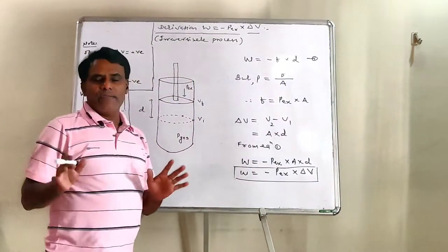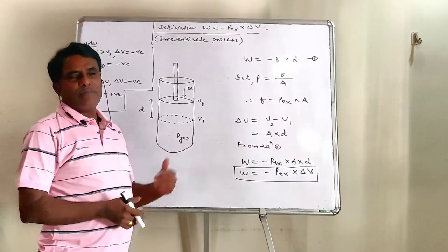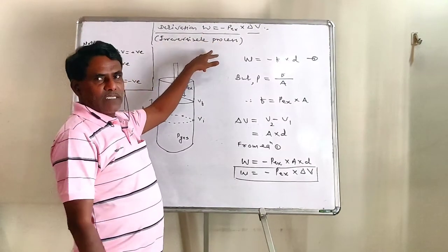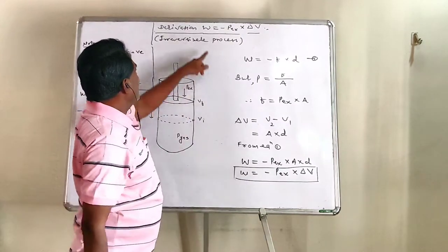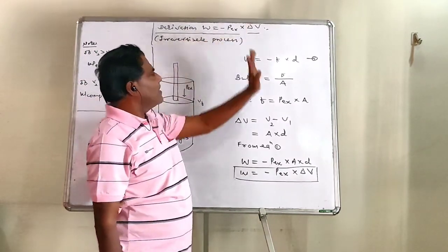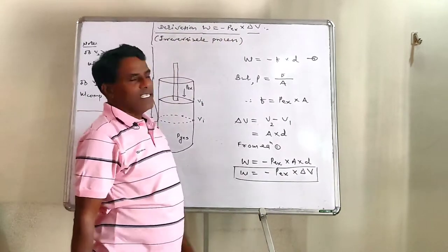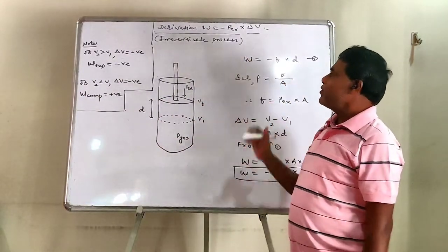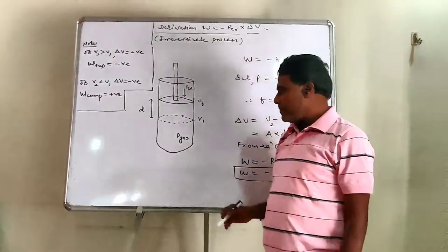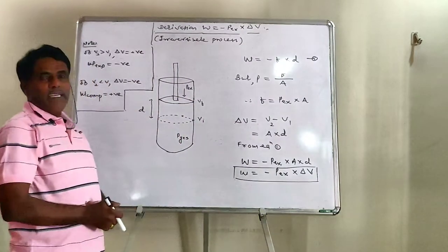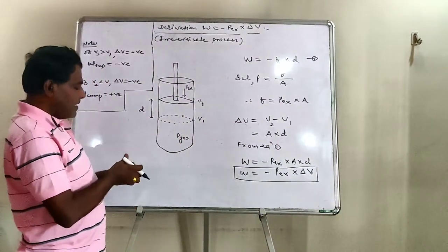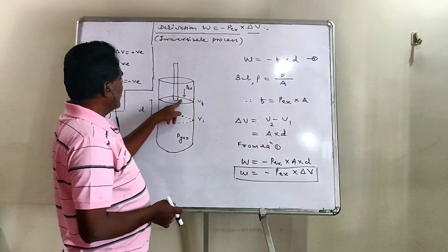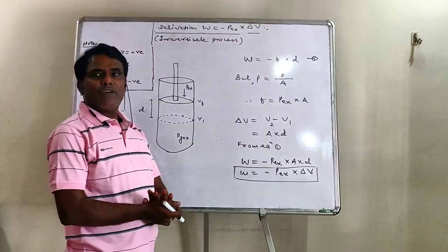Now we shall see a derivation for work done in an irreversible process, which gives W equals minus P-external into delta V — that is, opposing pressure into change in volume. Consider a cylinder containing a certain amount of gas, fitted with a weightless and frictionless piston.